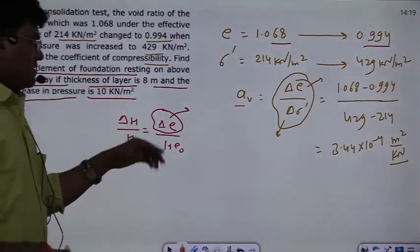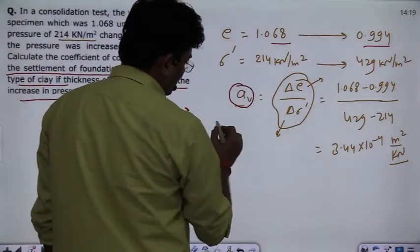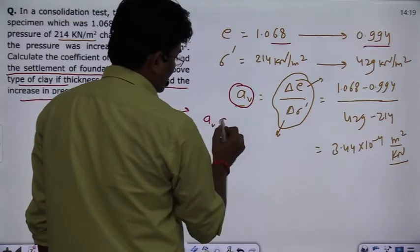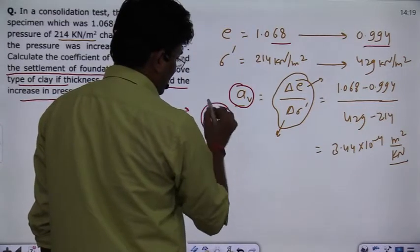Second, the child can do like this, that the AV is removed and AV is multiplied by delta sigma dash. But this will be wrong.